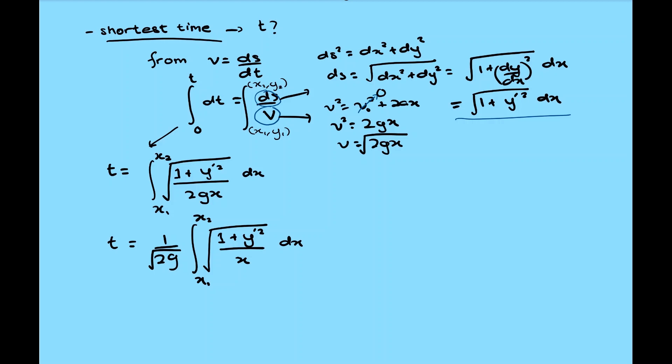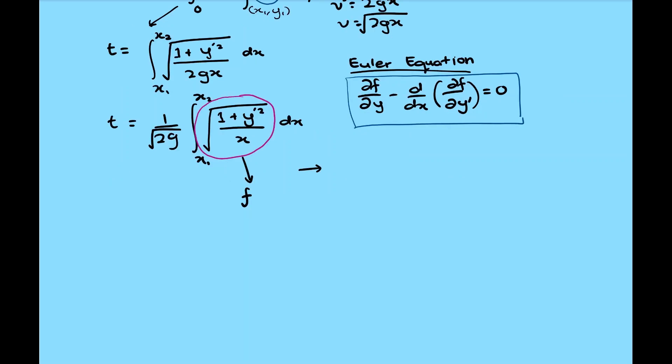From calculus of variation, there is this formula that we can use to find extremum, which is either maximum or minimum. And it is so-called Euler equation. So we're going to use it. The Euler equation is given by partial f partial y minus d over dx partial f partial y prime equal to zero. By solving for f, we can get the extremum of f. In our case, f, the functional, is the term inside the integral. And we're going to substitute this into the Euler equation.